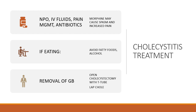Treatment of cholecystitis includes making the patient NPO, which decreases the need for the gallbladder to contract and helps decrease pain. IV fluids keep them hydrated and replace any deficient electrolytes. Pain management is really important, as well as antibiotics. It's important to note that because of histamine release, morphine may actually cause increased spasms and pain in patients with cholecystitis, so other drugs like fentanyl or Dilaudid are often used — but opioids are still the drug of choice.